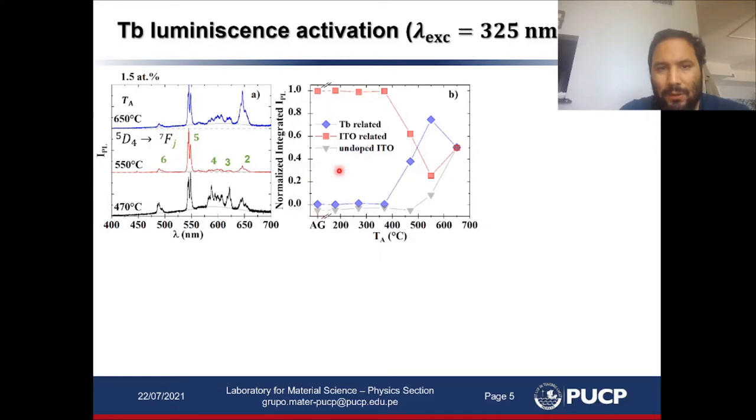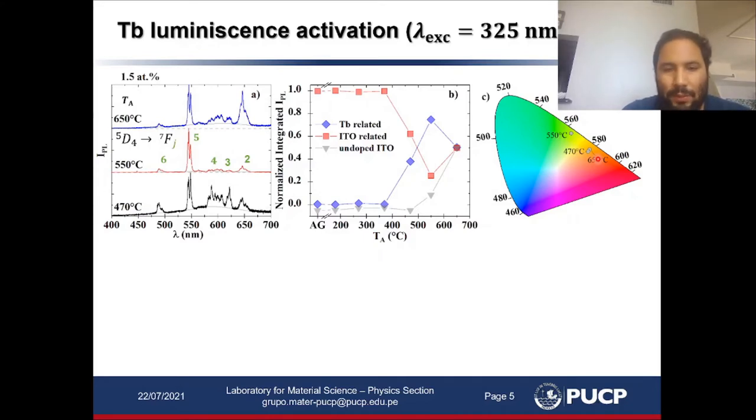We believe this because when we monitor the emission of an undoped ITO sample, we see that the host emission increases with annealing temperature, meaning that we might be activating other recombination paths and luminescence centers associated to the host. For comparison purposes, I'm showing you here the color or the apparent color in this color space CIE 1931, and we see that for higher annealing temperatures there is a shift to the red, which is again unexpected for terbium ions.